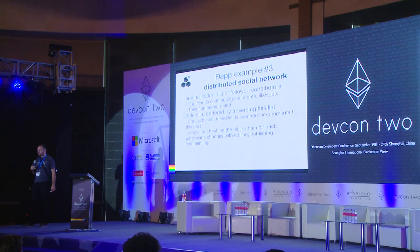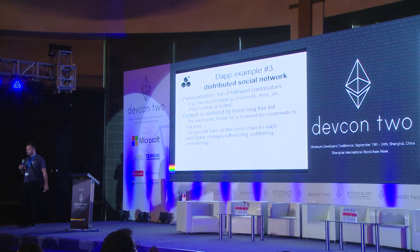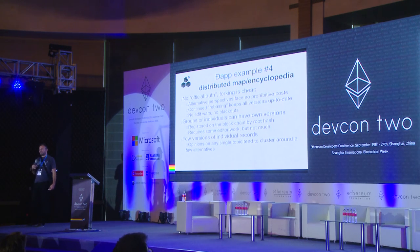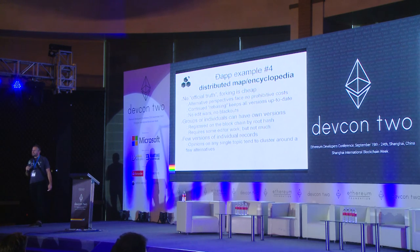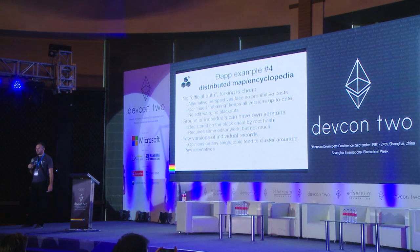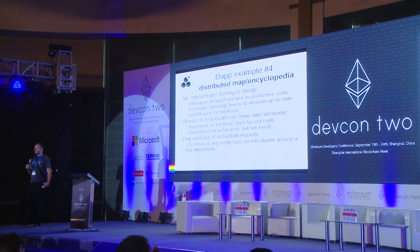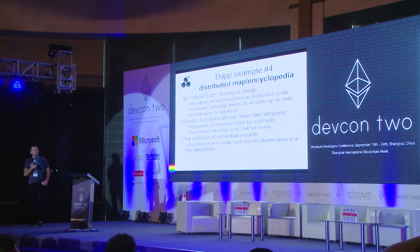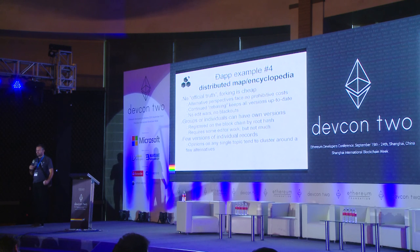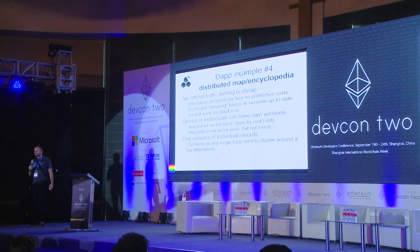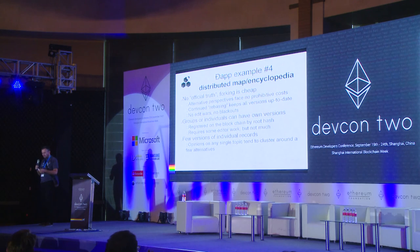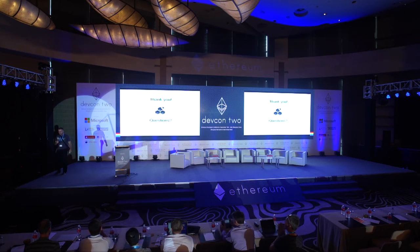The third example would be a distributed social network, and the fourth example a map or encyclopedia with no official truth. These things are pure vaporware now, although I'm aware of some teams working on projects like this, so maybe we will see something like this in the not very distant future. There are ways of doing things like this in a distributed fashion, and doing it with content address storage actually opens up possibilities which are plain impossible to do in the Web 2.0 way. Thank you for your time, and if you have questions I will be ready to answer them after the session.